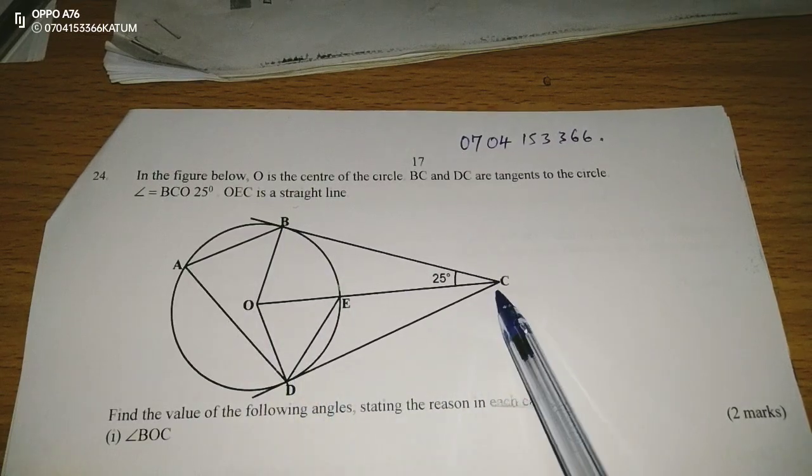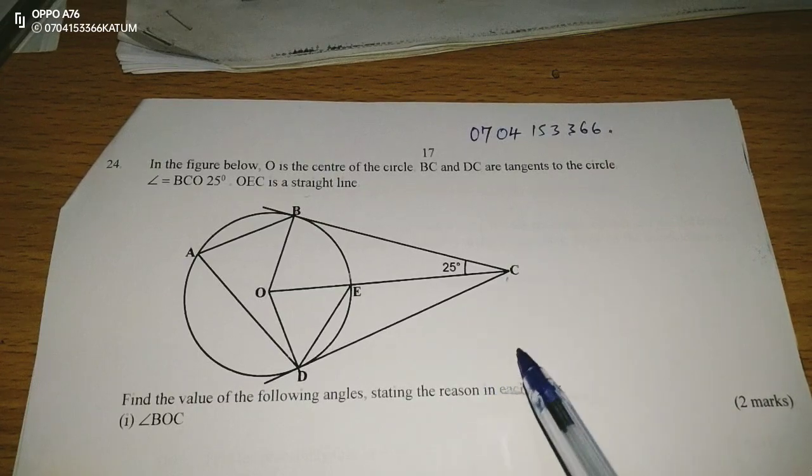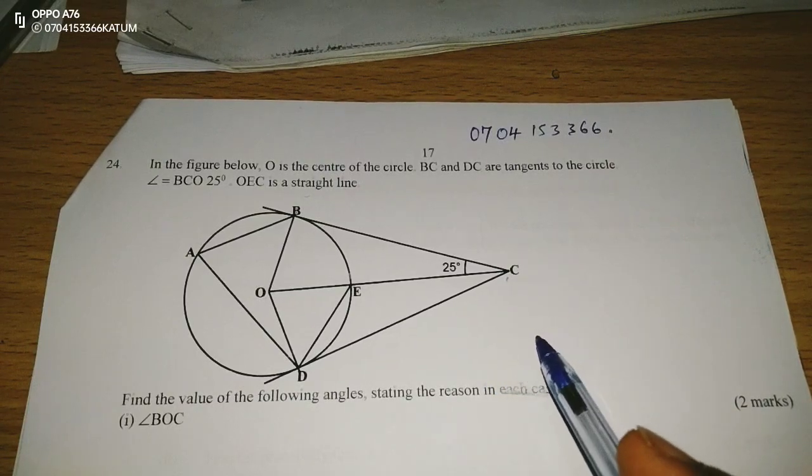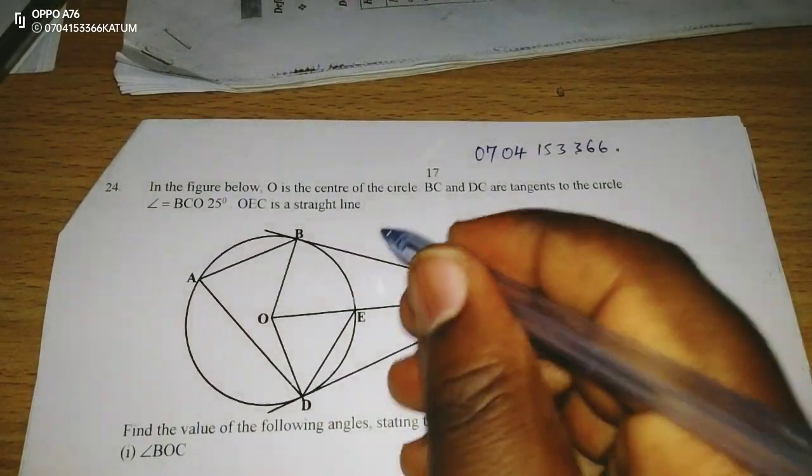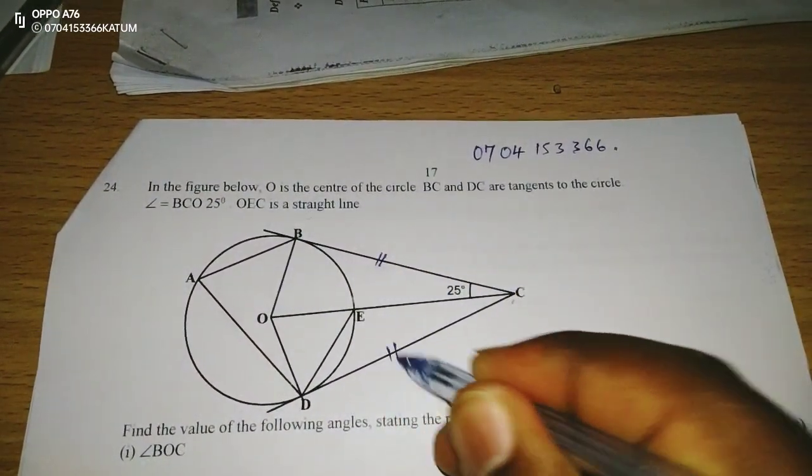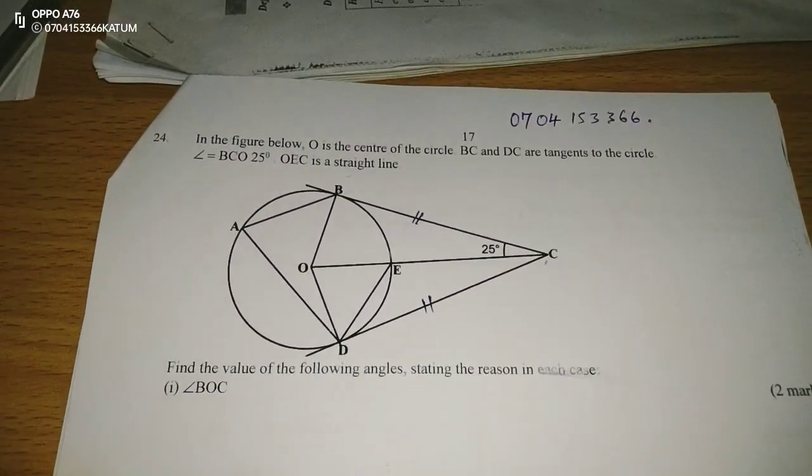BC together with DC are tangents to the circle. Something you should know about tangents to a circle from a common point is they are equal. Therefore BC and DC are equal lengths.